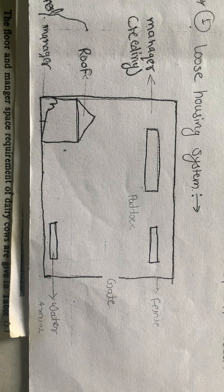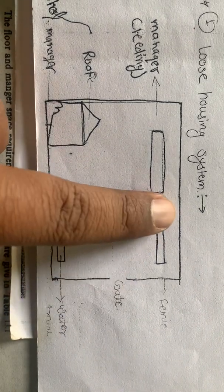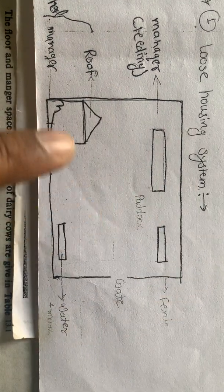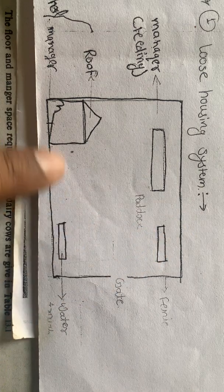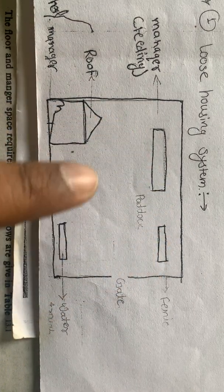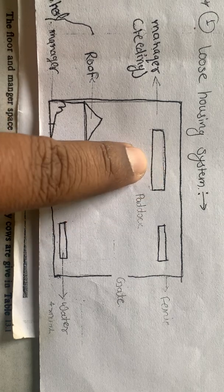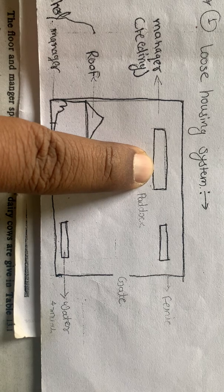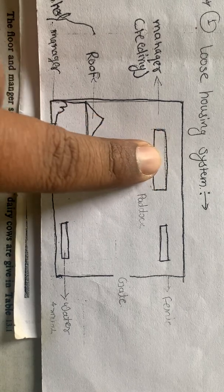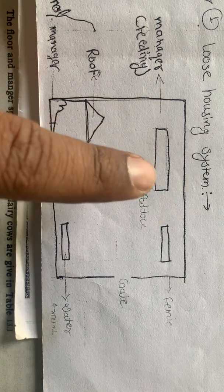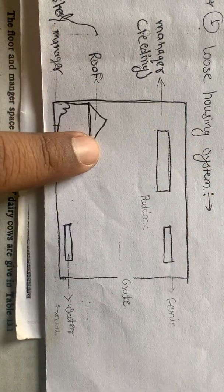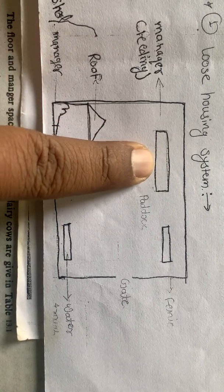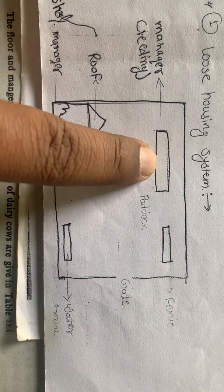This is the diagram of the loose housing system where this is the fence area. Within this fence, various constructions are provided. This is the manger, which is the place where the feed is given to the animals.